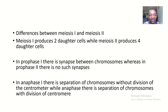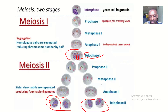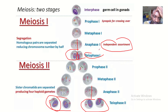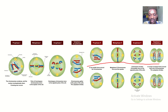The third difference: in anaphase 1, there is separation of chromosomes without division of the centromere. While in anaphase 2, there is separation of chromosomes with division of the centromere. Looking at our image, you can see in anaphase 2 there is separation of the chromosomes, while in anaphase 1 there is independent assortment — there is no separation of chromosomes and no division of the centromere.